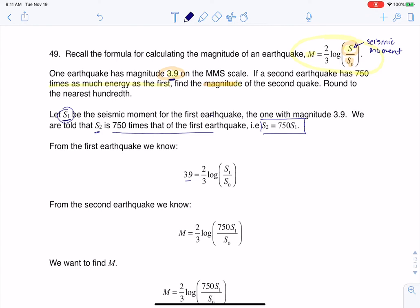We also know from the second earthquake, we don't know its Richter number, but we do know its seismic moment is 750 times that of the first earthquake. So now keep in mind that we want to find M. This is our endgame. Can we find the magnitude of that second earthquake?